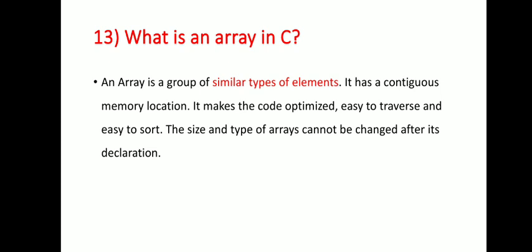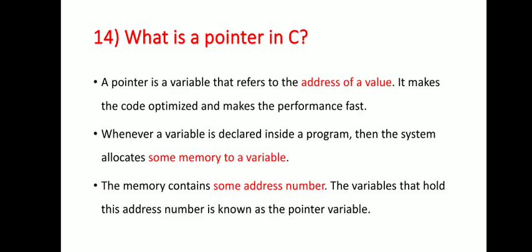Next question: what is an array in C? An array is a group of similar type of elements. It has a continuous memory location. It makes the code optimized, easy to traverse, and easy to sort. The size and type of an array cannot be changed after its declaration.